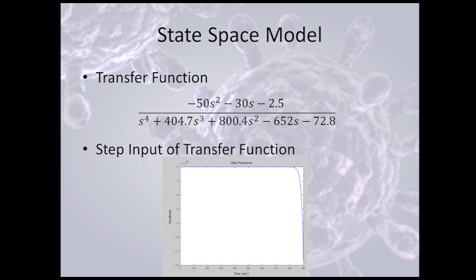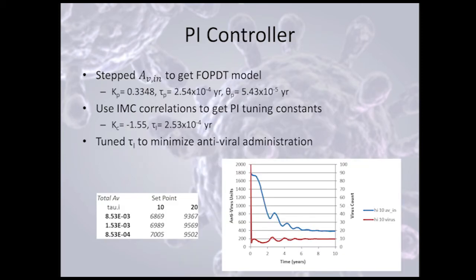A little bit about state-space. We used those previous equations, linearized them, put them in state-space form, and then developed this transfer function. As you can see from the graph, this is unstable, and we confirmed that by finding the eigenvalues. We noticed a positive eigenvalue, which meant the system was unstable. It's also fourth order, which means we couldn't fit it using a first order plus dead time model. So instead of using the state-space model and the first principles method, we went more of an empirical route.